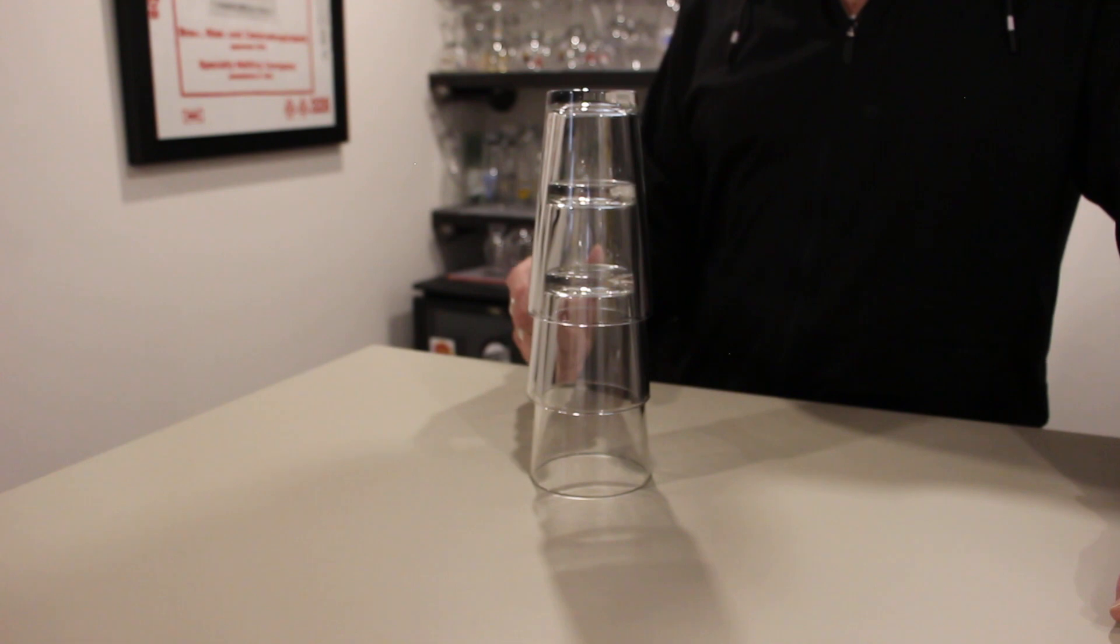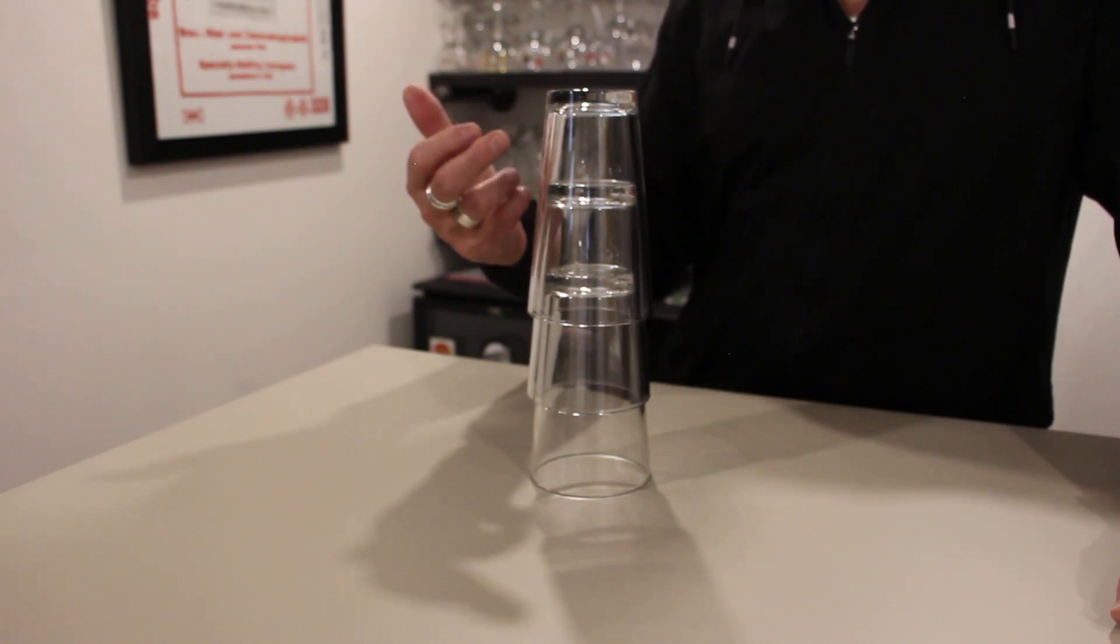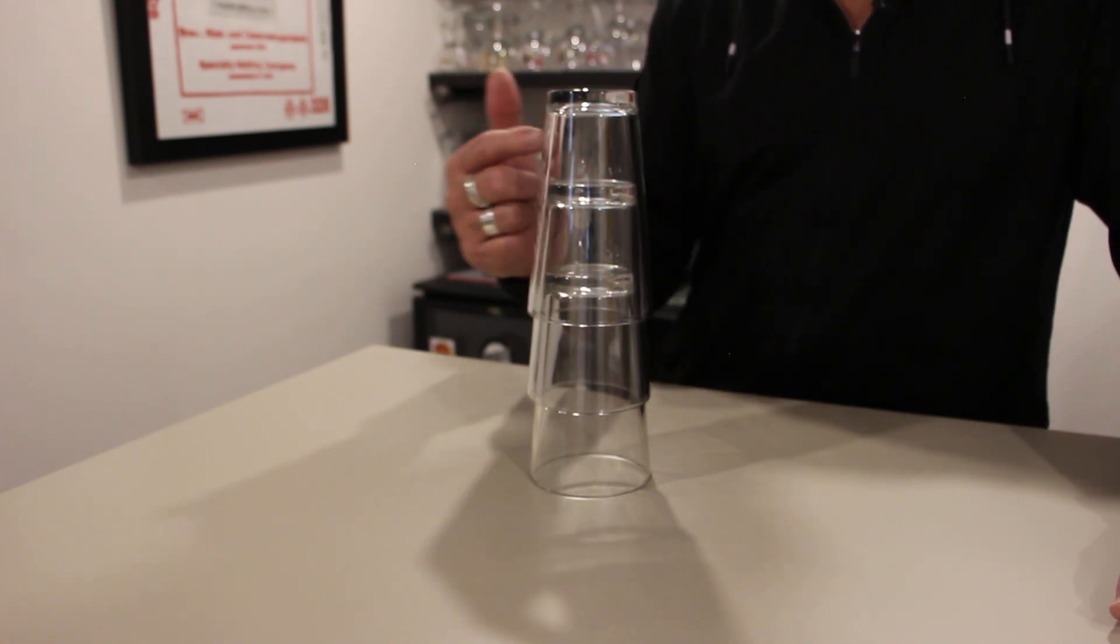The second thing to think about is a lot of times when bars and restaurants take it out of the glass washer, this is wet on the inside, which means that it sticks to the next glass. And that prevents the beer glass from getting dry up in here.